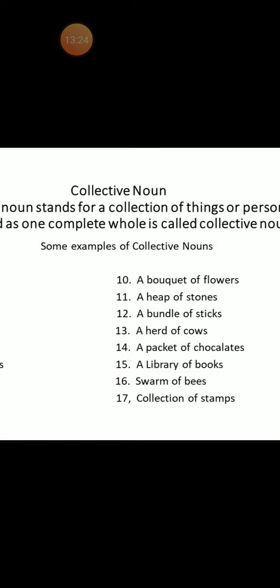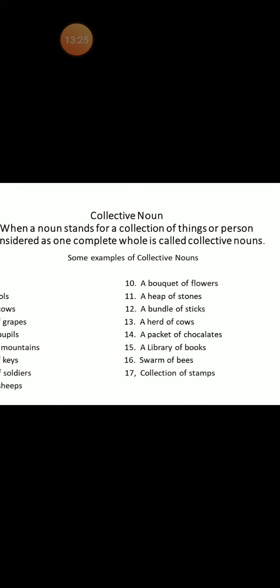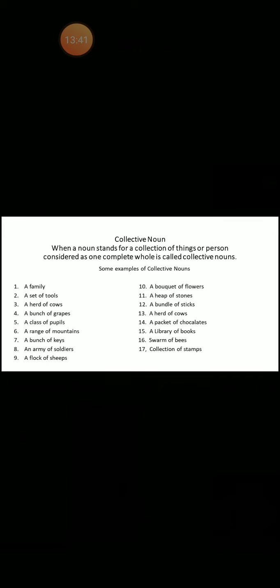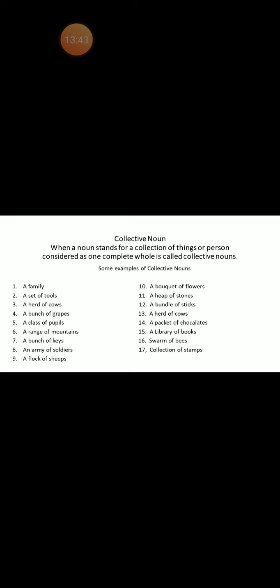What do all these mean? A bundle of sticks means a collection of sticks. A library of books means many many books — a collection of books. There are more than many, so these are all called collective nouns, which are many but are considered as one whole.